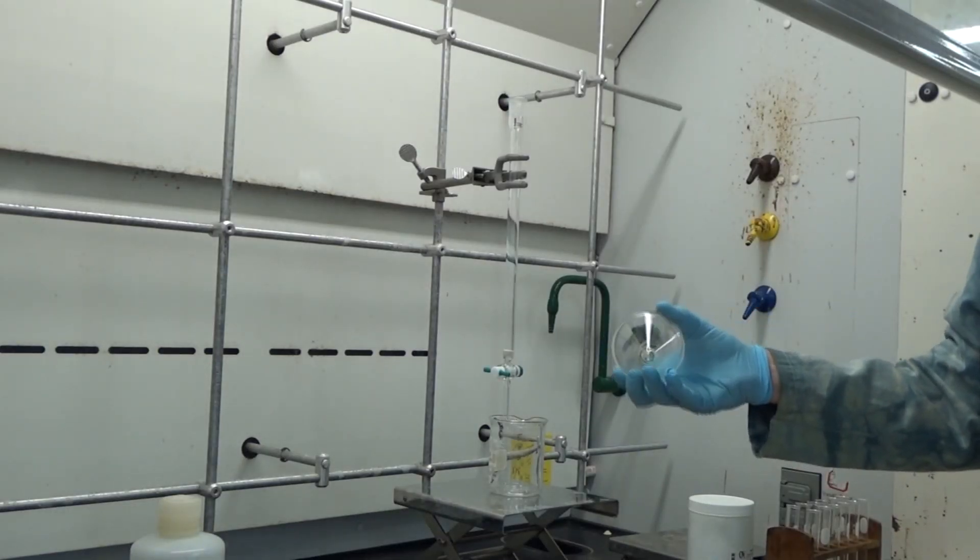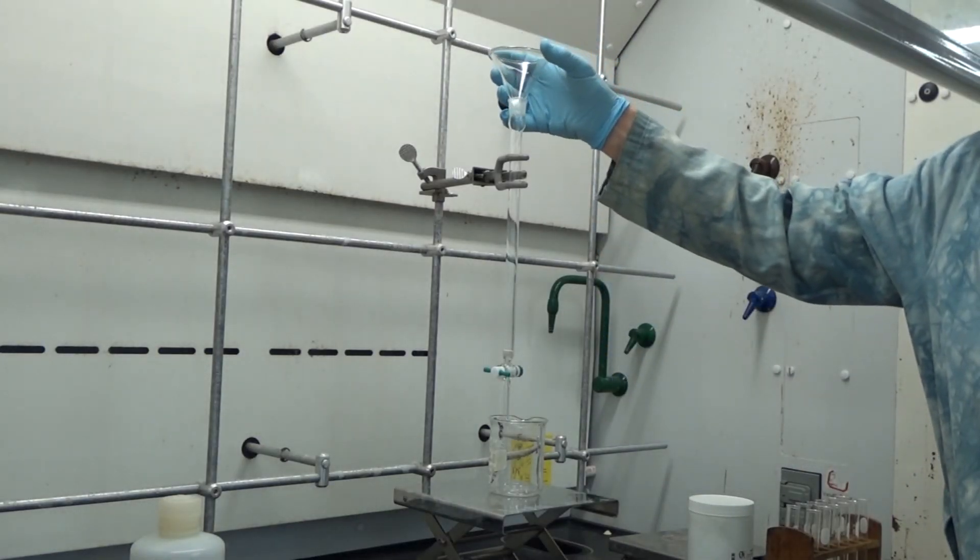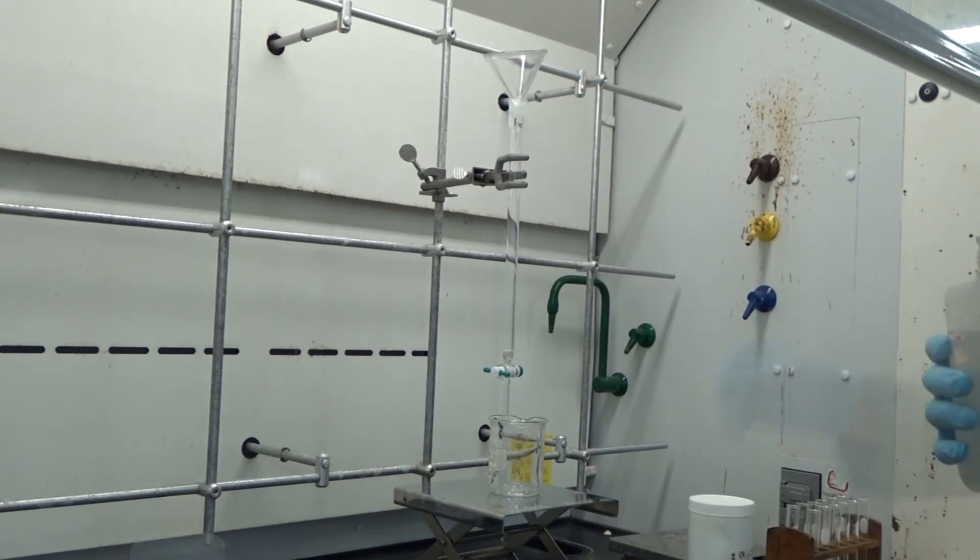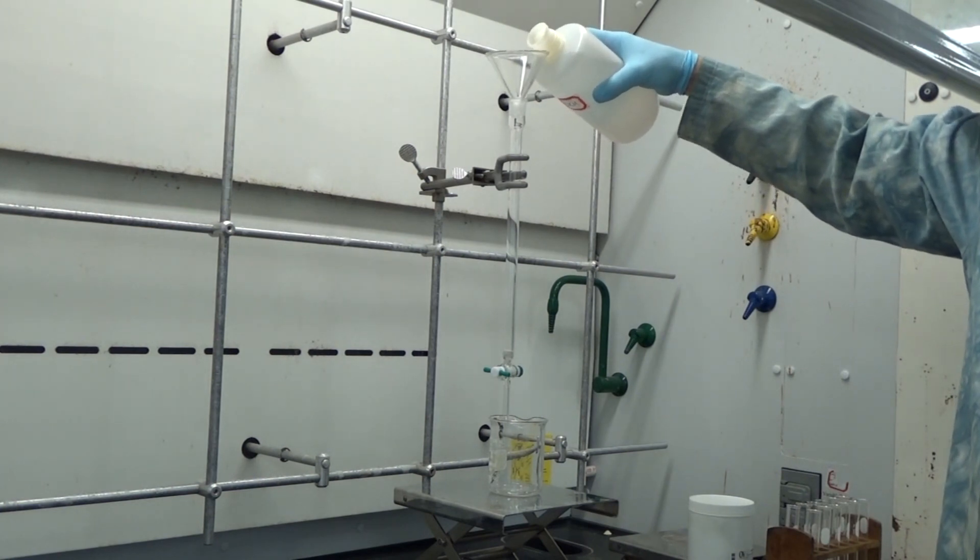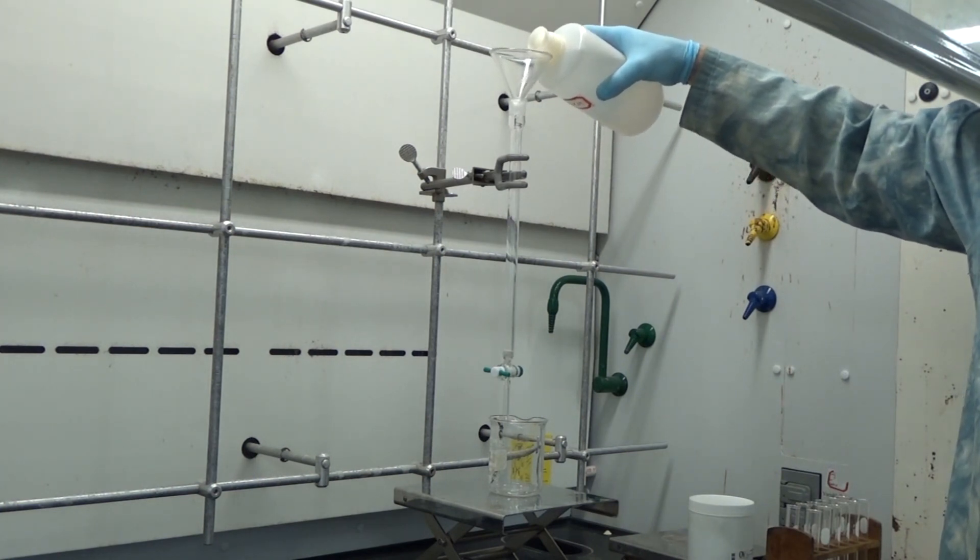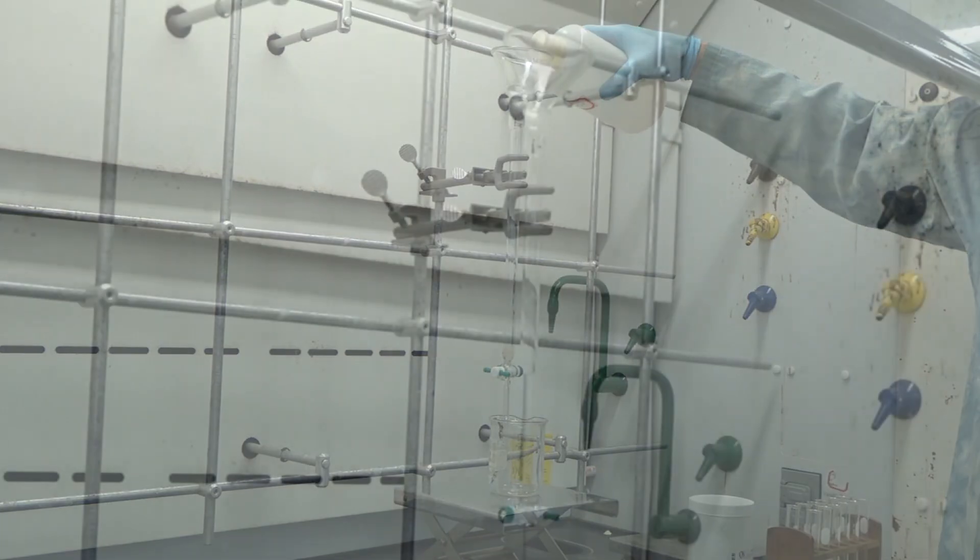Next, it's time to add a little bit of mobile phase to the column, so that we'll have something there to protect our base from the splashing stationary phase when it's added. So I'm going to place my glass stem funnel in the top and pour just a little bit of mobile phase into the column, being sure that the stopcock is closed, of course.